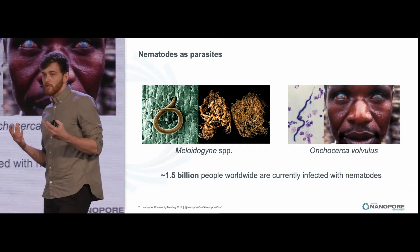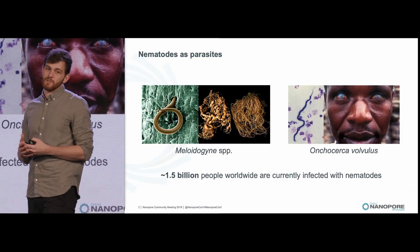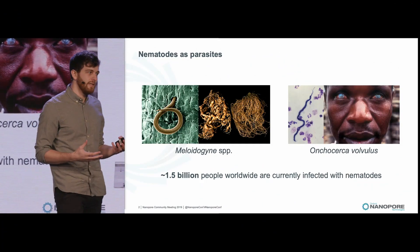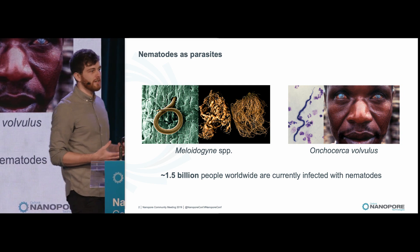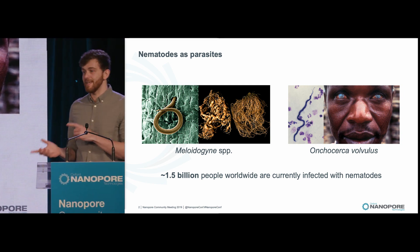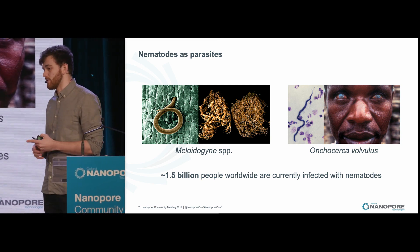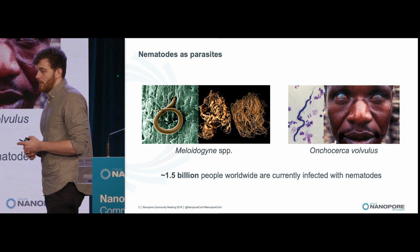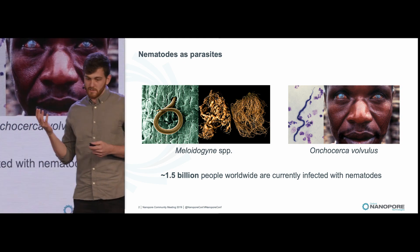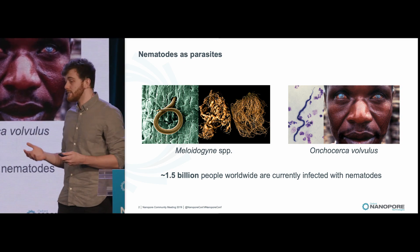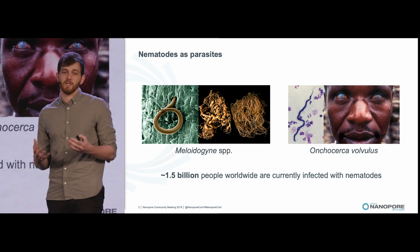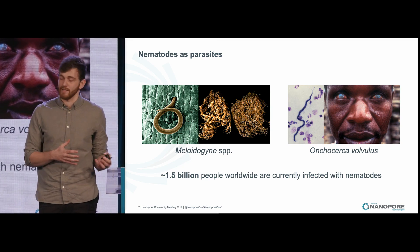Nematodes are incredibly important. They're some of the most abundant organisms on our planet, and they live in nearly every imaginable habitat, including inside other organisms. A good example of this is the Meloidogyne species, which cause huge economic losses each year by parasitizing our crop plants.